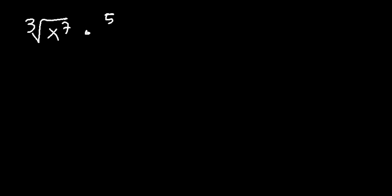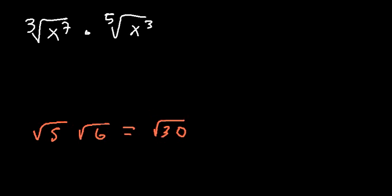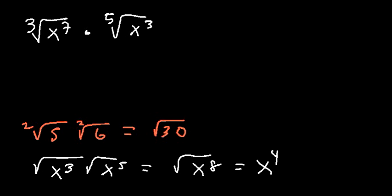There's one more important example: what if you want to multiply the cube root of x to the 7th by the fifth root of x to the 3rd? When index numbers are different, you can't simply multiply what's inside. The reason you can multiply square root of 5 times square root of 6 is because the index numbers are the same. When index numbers differ, you need to convert from radical form to exponential form.